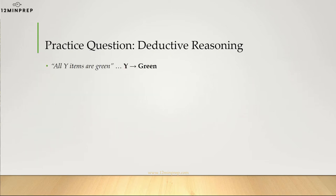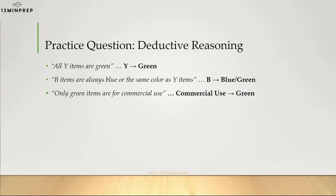All Y items are green can be written as Y → green. B items are always blue or the same color as Y items can turn into B → blue or green. And only green items are for commercial use can turn into commercial use → green.